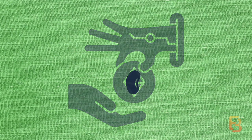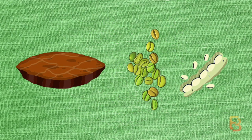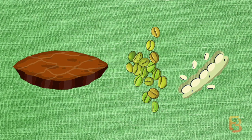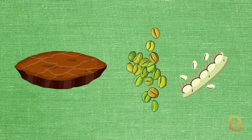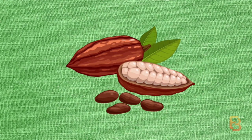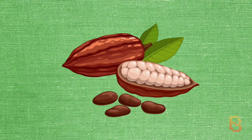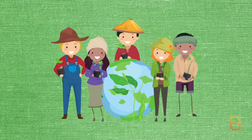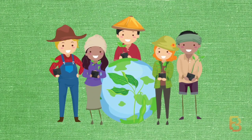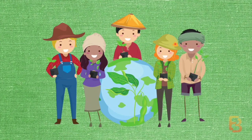Anytime Beanstalk is willing to issue debt, you will see Soil in the Field. Soil is the protocol's willingness to issue debt. Beans that are not in the Silo can be lent to Beanstalk in exchange for Pods — Pods are the native debt asset of the protocol. Pods ripen and become harvestable, meaning redeemable for one Bean, on a FIFO (first-in, first-out) basis.